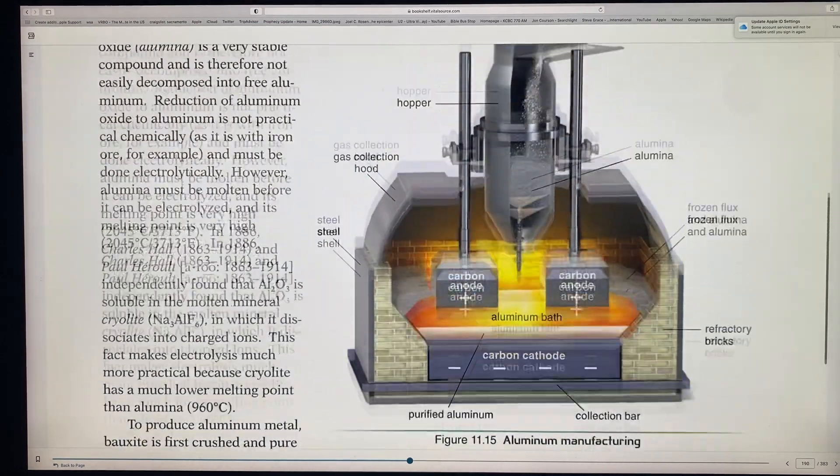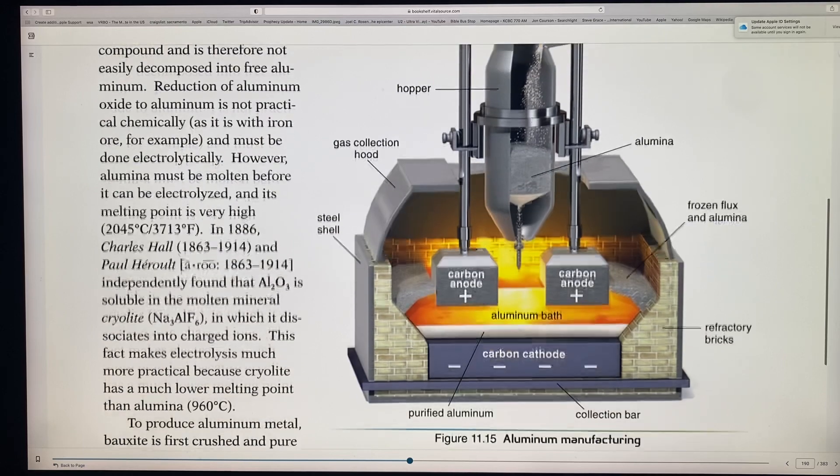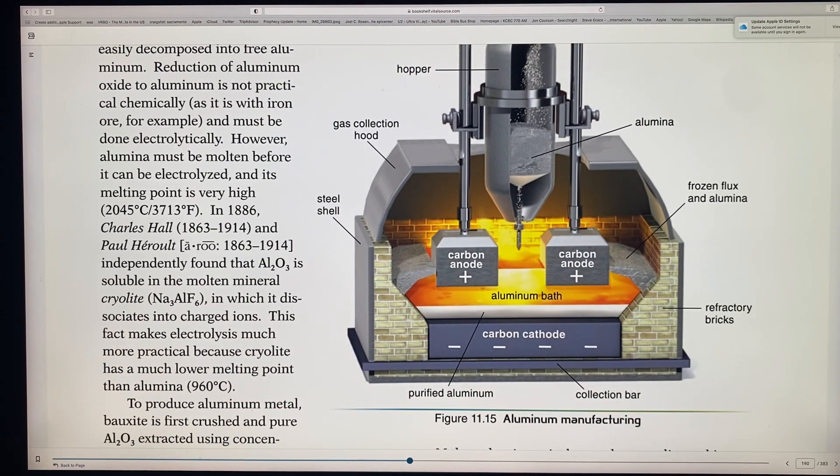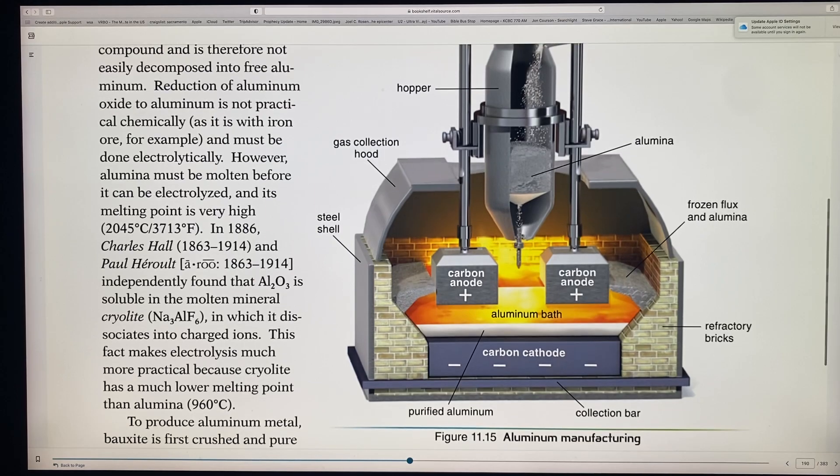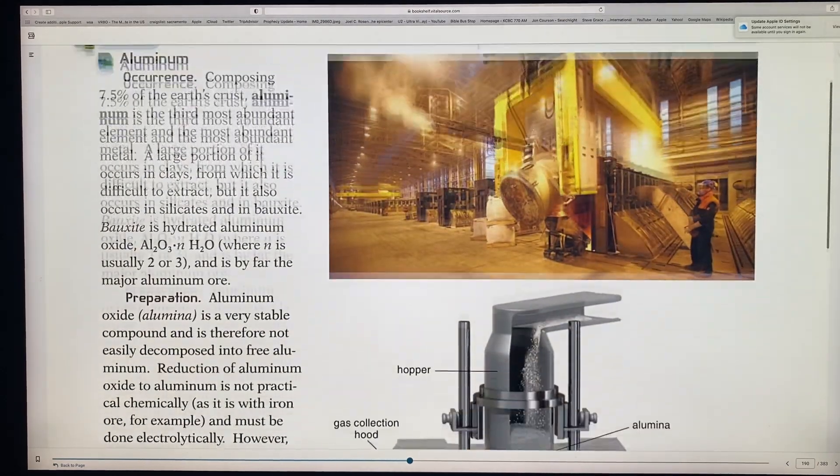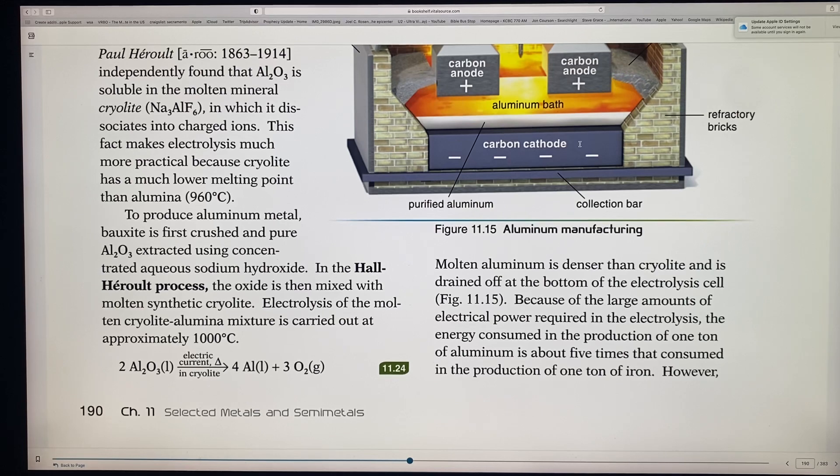So here we have the equation here for, you see the alumina here and then the electric current and cryolite. And now the temperature doesn't have to be as high, and then you get pure aluminum and oxygen as a by-product. So that's pretty important. Here's a picture of the aluminum manufacturer. And you see how they have a carbon anode and two of them in between, they have this electrolysis here and the carbon cathode and see how the aluminum, the gas, the gas and the hopper and how it comes in, comes in the top here. And so very unique aluminum manufacturer.